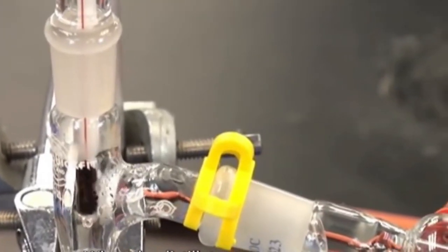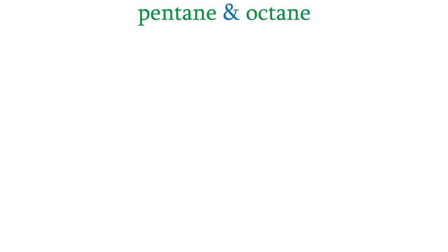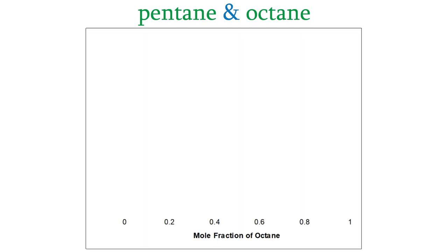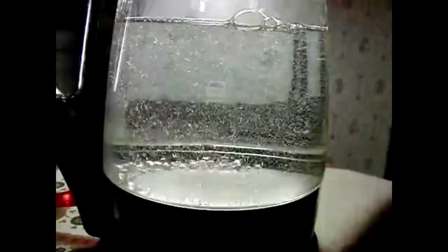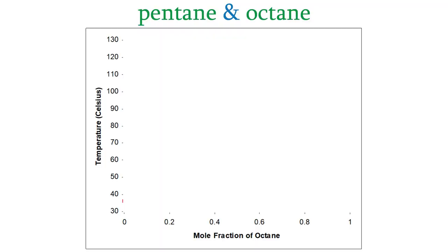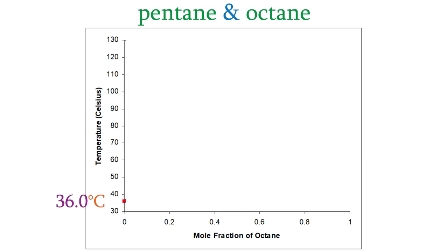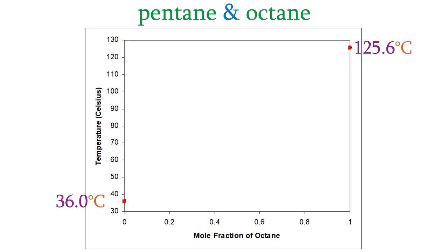Let's look at a binary solution of pentane and octane. I'll plot the mole fraction of octane on the x-axis and temperature on the y-axis. When the mole fraction of octane is zero we have pure pentane, whose boiling point is 36.0 degrees Celsius. When the mole fraction of octane is 1 we have pure octane, whose boiling point is 125.6 degrees. We then plot the liquidus and vapor curves for this system.